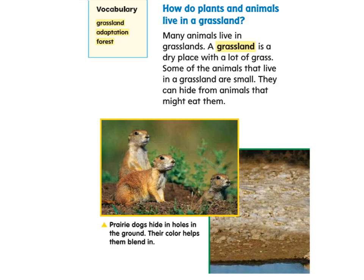Within this land habitat section there are three vocabulary words we need to know. One of them is grassland, one of them is adaptation, and the other is forest.